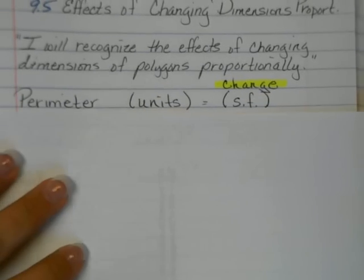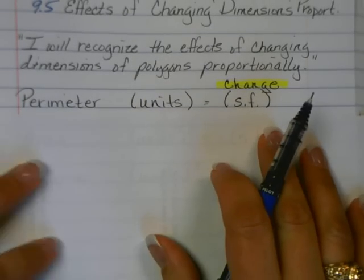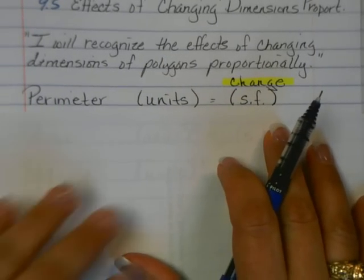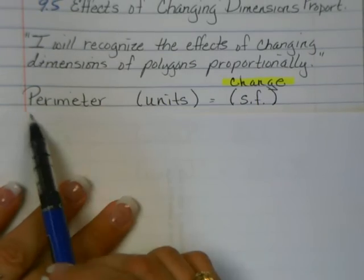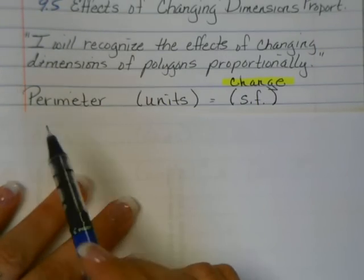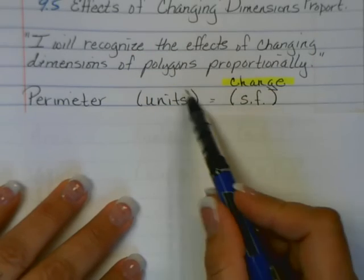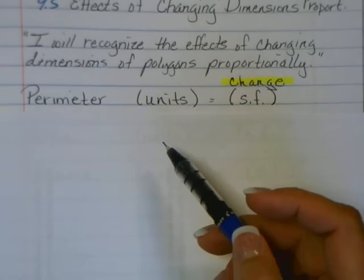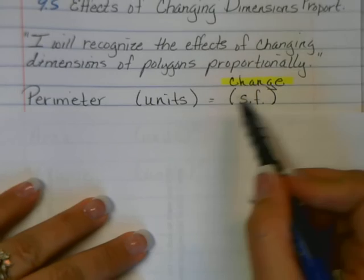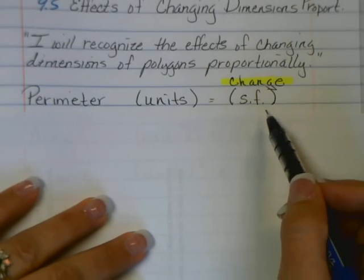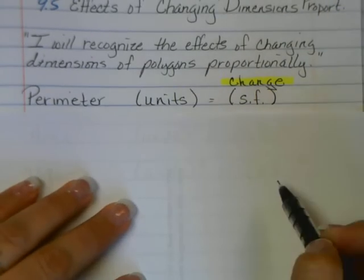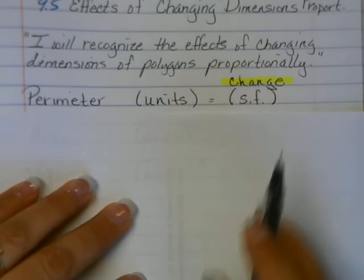As we move on, we need to talk about a few things. I want to give you a few formulas to keep in mind that we'll be using. When we're talking about effects on perimeter, if your answer is in units versus units squared or cubed, then you can take your original perimeter and multiply it by the scale factor.